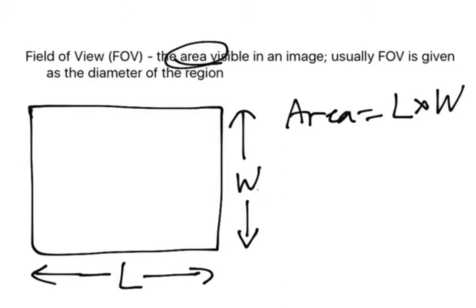So sometimes the field of view is given in terms of the area, but most often the field of view is given in terms of the diameter of the region. The diameter is the diagonal length.